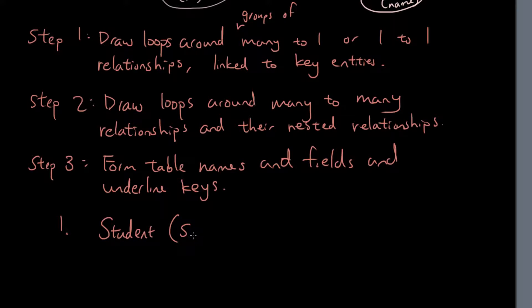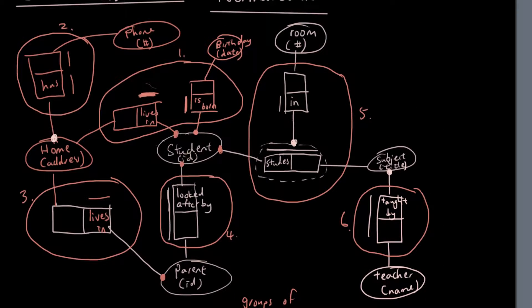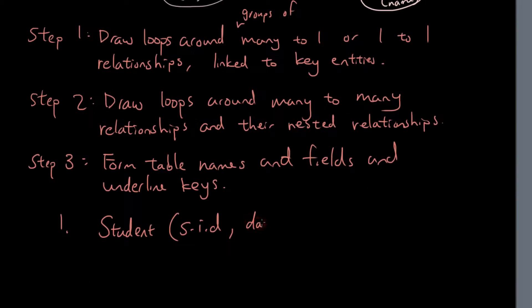What are the fields? We have the student ID. And we got the birthday, we got the date, and we got the home address. Date, birth date, we got the home address. So student ID is the key.